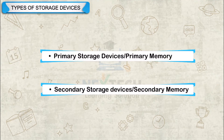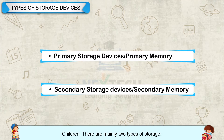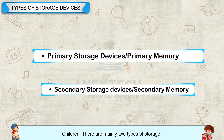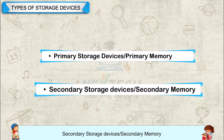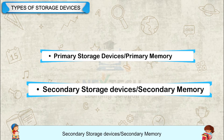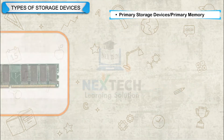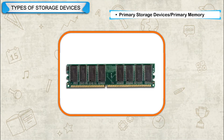Types of Storage Devices. Children, there are mainly two types of storage: Primary Storage Devices or Primary Memory, and Secondary Storage Devices or Secondary Memory.